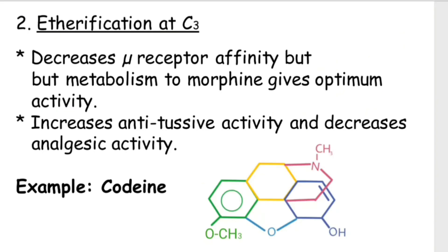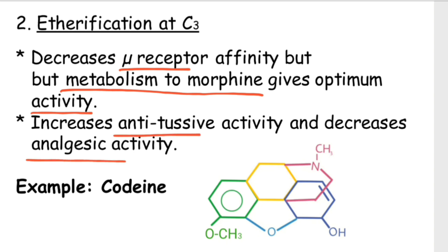The second point is etherification at C3 position. It decreases mu receptor affinity, but metabolism to Morphine gives optimum affinity — meaning when the compound is etherified at C3 but metabolized back to Morphine, it gives optimum affinity. It increases antitussive activity and decreases analgesic activity. The example is Codeine, which is etherified at C3 and acts as a prodrug.